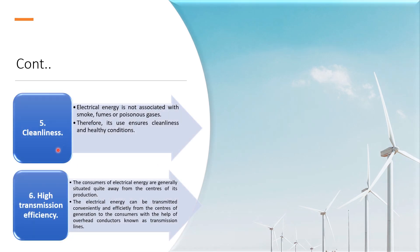Fifth point is cleanliness. Electrical energy is not associated with smoke, fumes, or poisons, thus it is used to maintain clean and healthy conditions. Last one is high transmission efficiency. The consumers of electrical energy are generally situated quite away from the centers of production. The electrical energy can be transmitted conveniently and efficiently from the centers of generation to the consumers with the help of overhead conductors known as transmission lines.